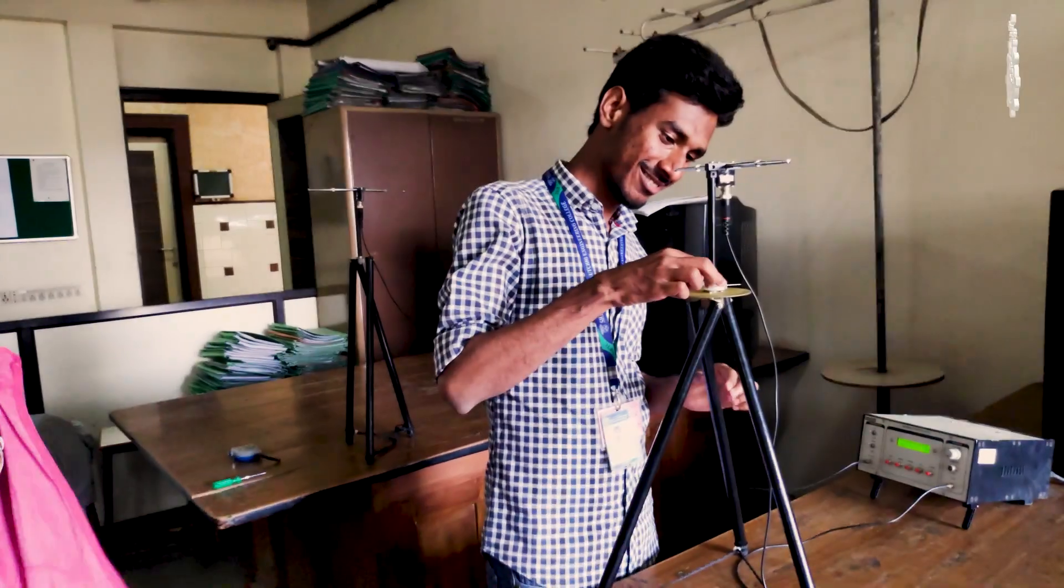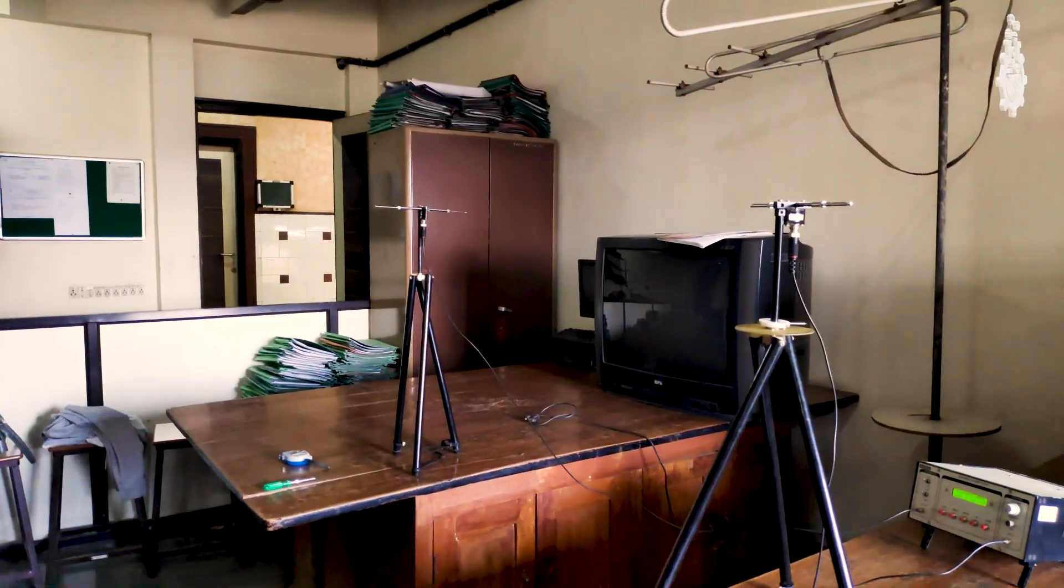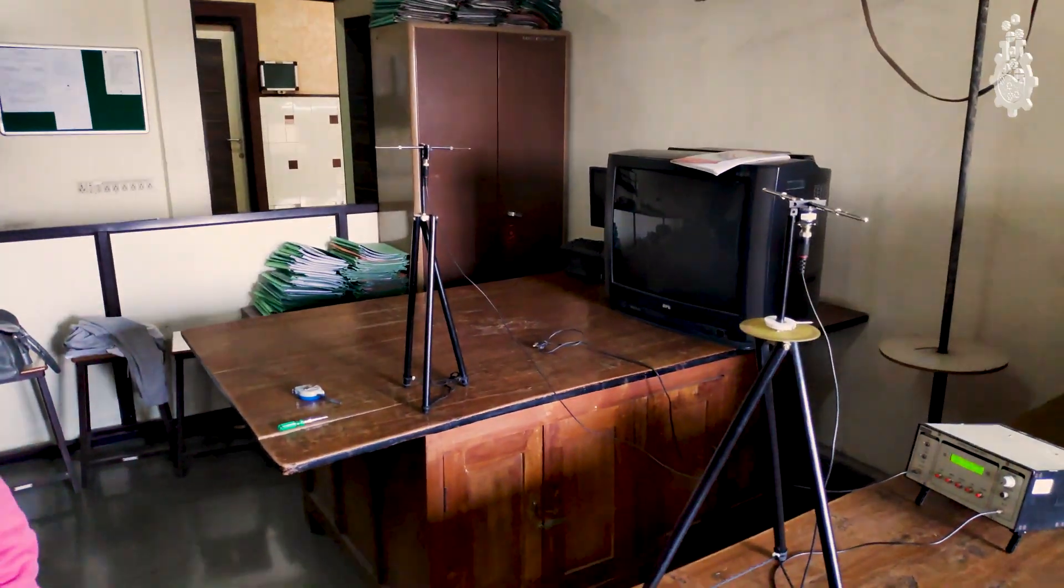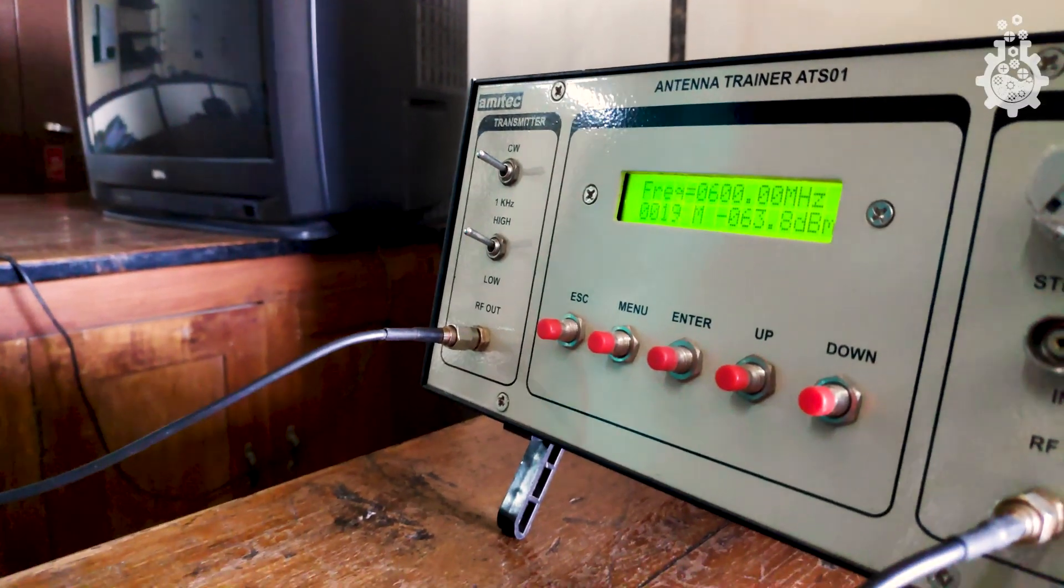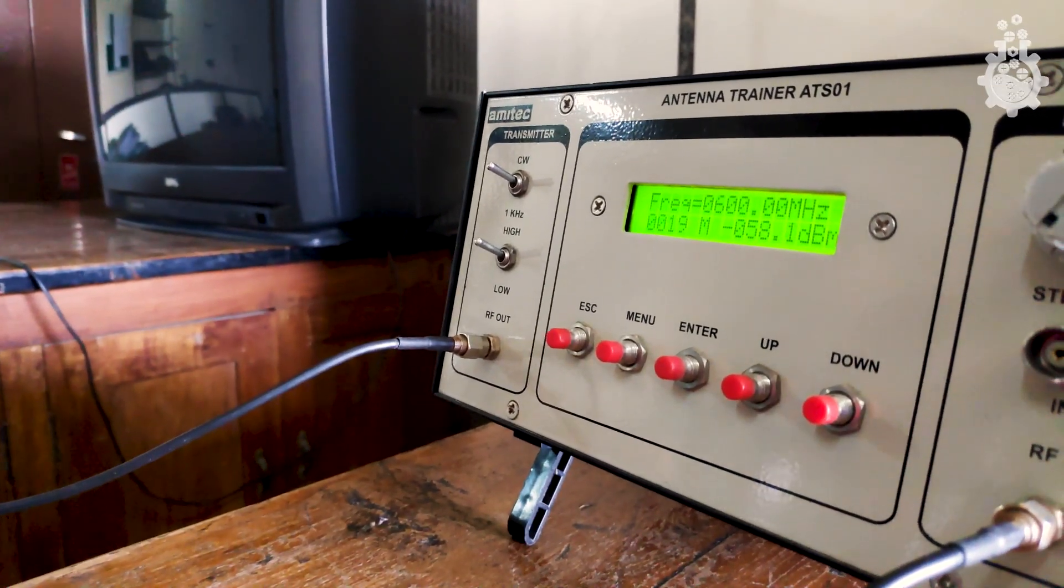To ensure the best results, make sure there is no object or person between the two antennas. Just observe the readings from a distance. Do not rush and let the signal settle down once the angle is adjusted. This will avoid unnecessary errors.